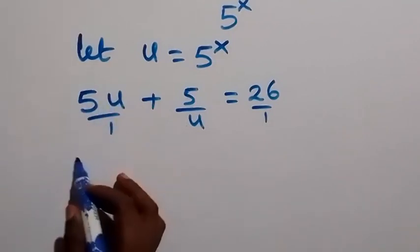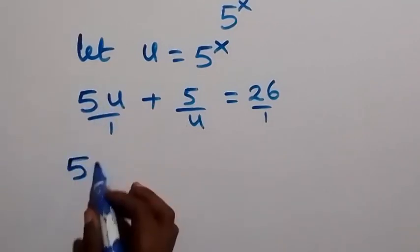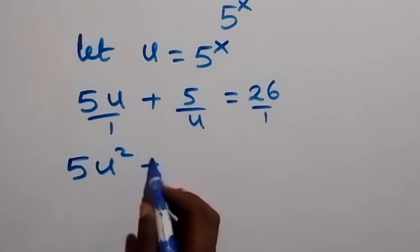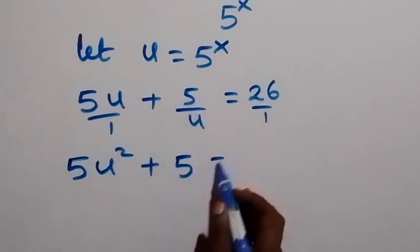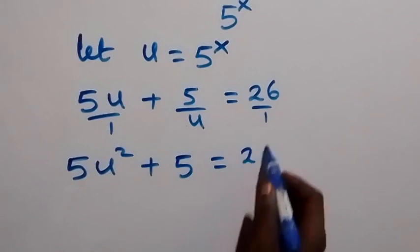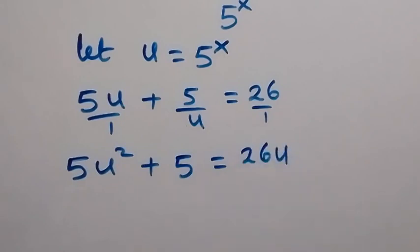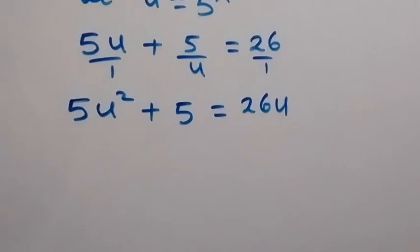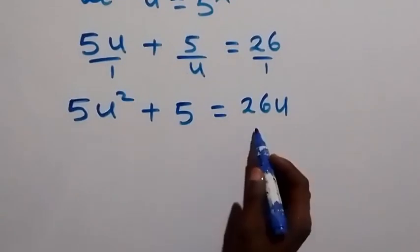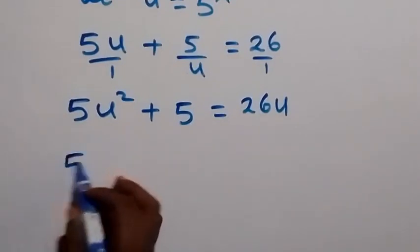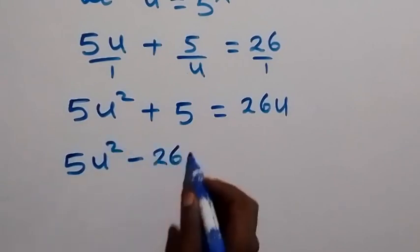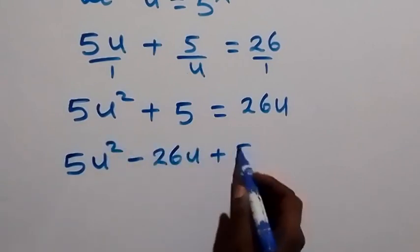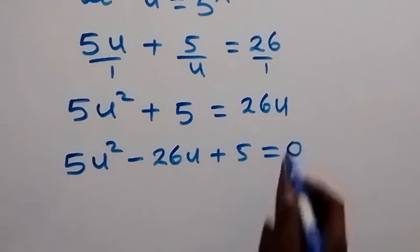So, u times 5u will give us 5u squared. Then, plus u times 5 over u will be 5, equals to u times 26, giving us 26u. Then we can take everything to one side and form a quadratic equation.